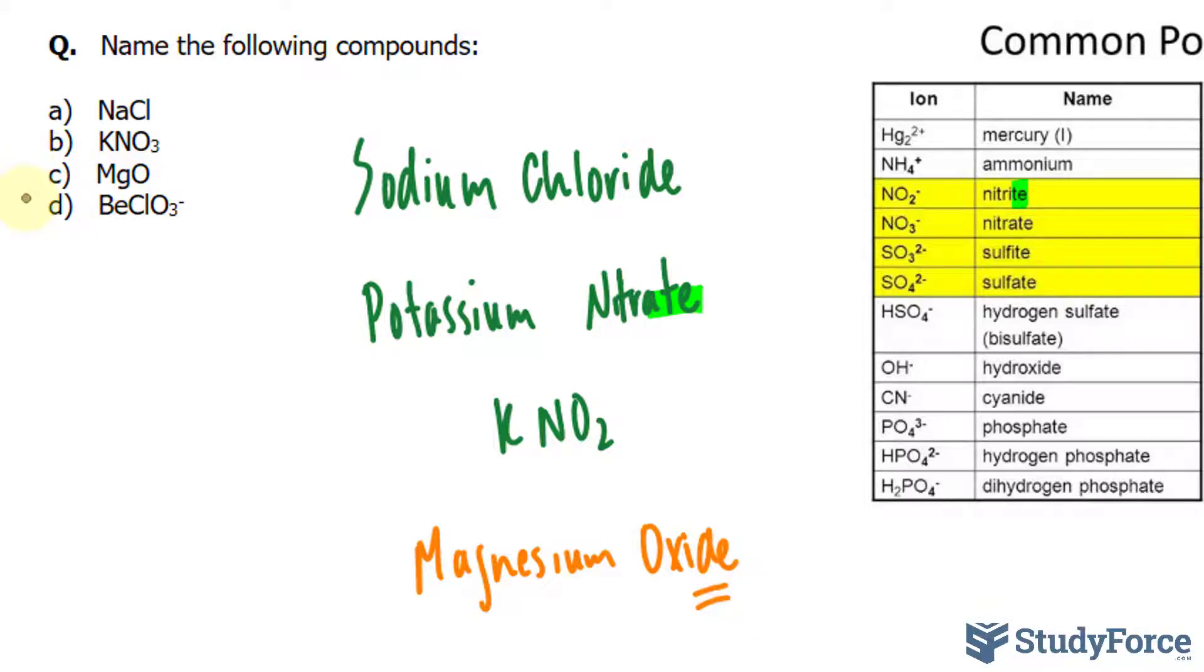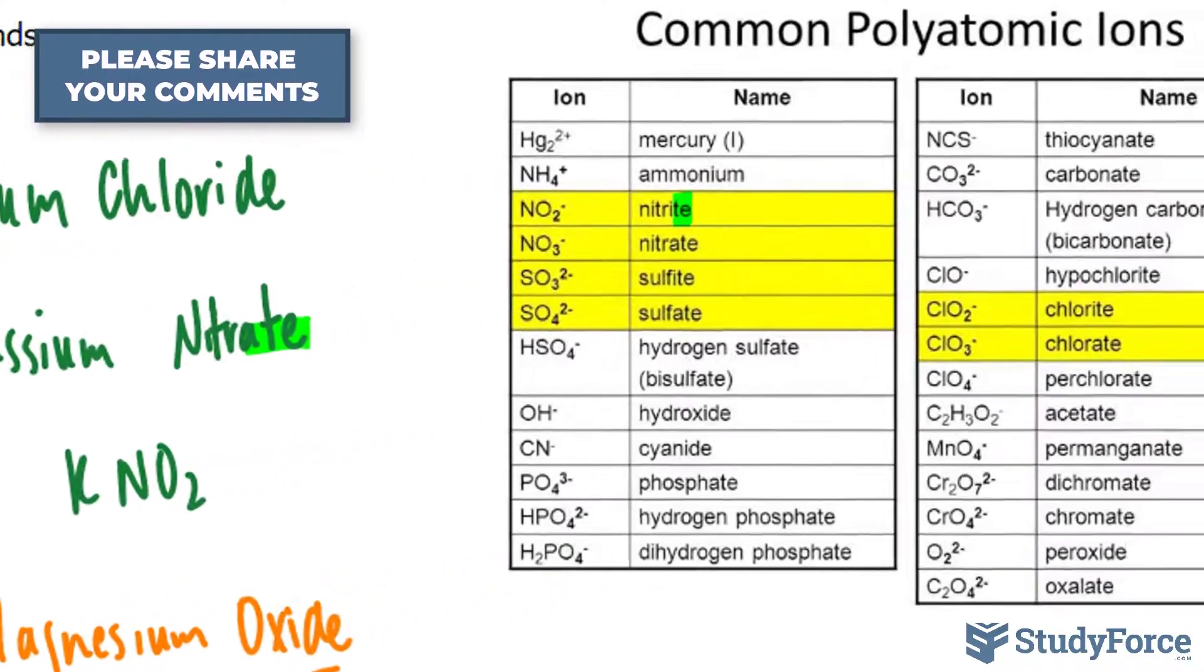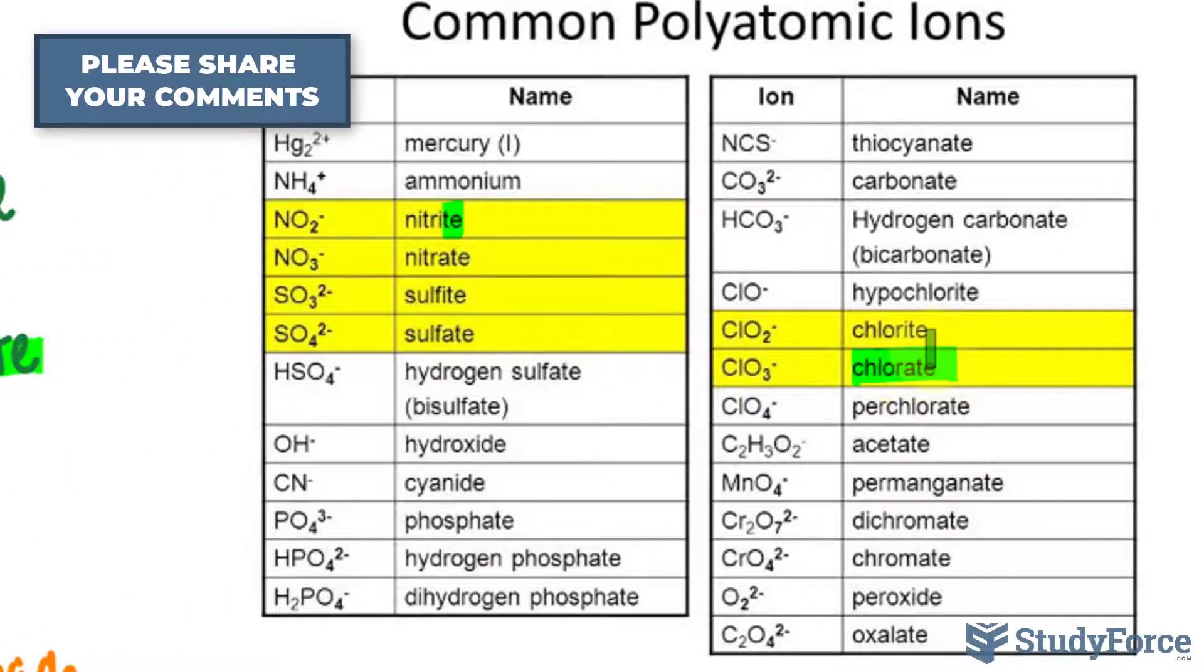Finally, in example D, we have Be, which represents beryllium, that's a metal, and a polyatomic ion, ClO3 minus. ClO3 minus is chlorate.